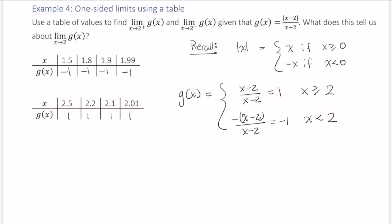So what does this tell us? Let's start with this top table. I'll write that in purple. So the limit as x approaches 2 from the left of g of x is equal to negative 1. And this one we can do in green. The limit as x approaches 2 from the right of g of x is equal to positive 1.